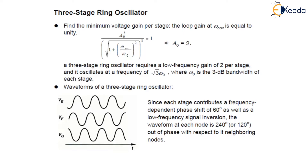Now examine the waveforms at the three nodes of the oscillator. Since each stage contributes a frequency-dependent phase shift of 60 degrees, as well as a low-frequency signal inversion, the waveform at each node is 240 degrees — or equivalently 120 degrees — out of phase with respect to its neighboring node. The ability to generate multiple phases is a very useful property of this ring oscillator. The waveforms at nodes VE, VF, and VG are 240 degrees out of phase with each neighboring node.